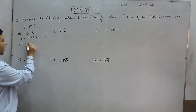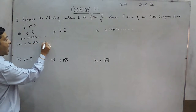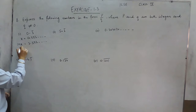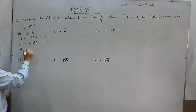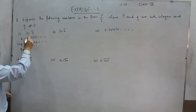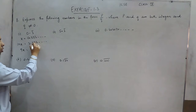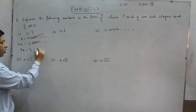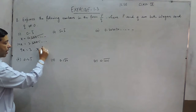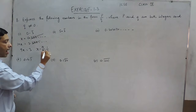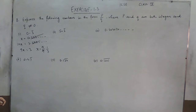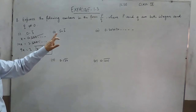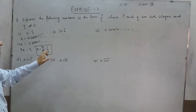So 10x will become 3.333 and it is happening endlessly. When we subtract 10x minus x that is 9x, all the decimal places will be cancelled out and it comes out to be 3. The value of x becomes 3 upon 9, which can further be cancelled and written as 1 upon 3. So the value of P comes out to be 1 and the value of Q is 3.